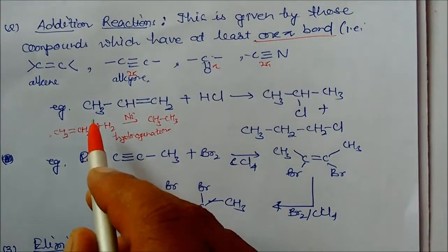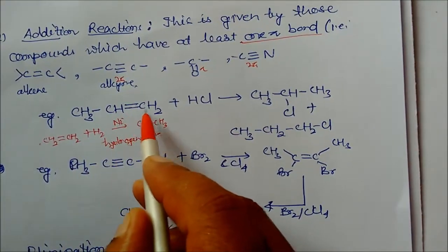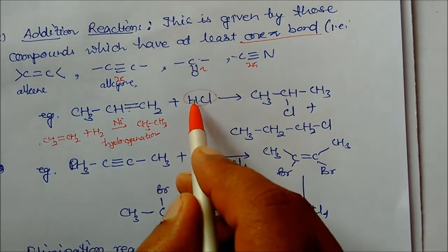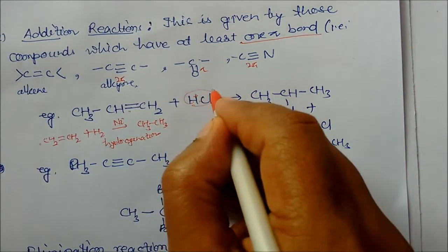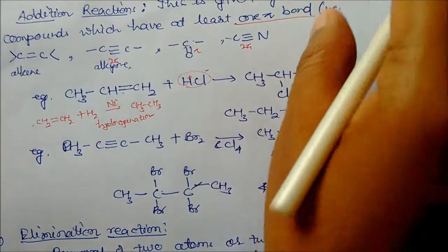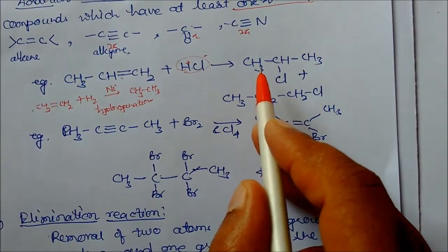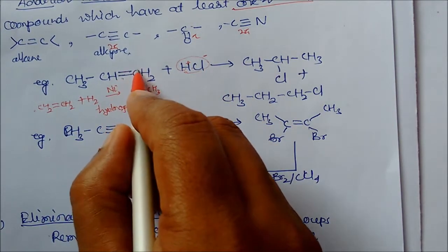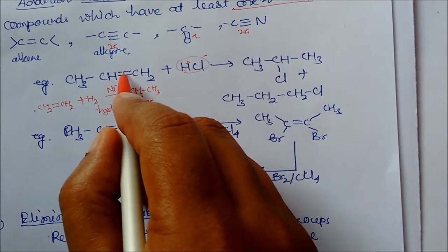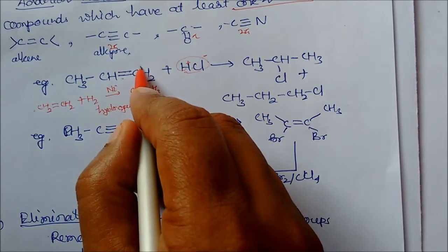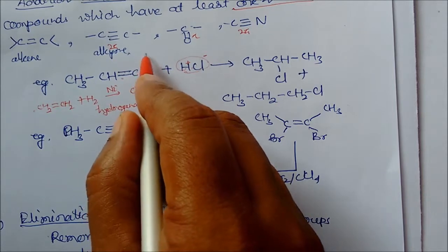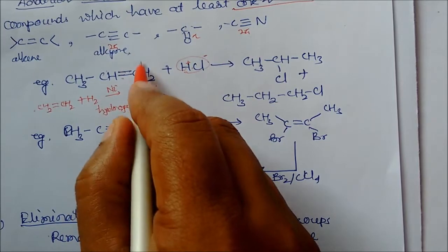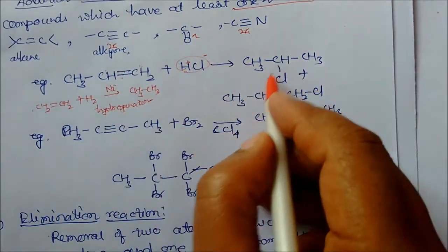For example, CH3-CH=CH2 reacts with HCl (H+ and Cl-). The reagent attacks the pi bond. The pi bond has electrons that can shift to either side. If the electron shifts one way, that carbon becomes negative and is attacked by H+. If the electron shifts the other way, that carbon becomes positive and is attacked by Cl-. So we get two types of products.